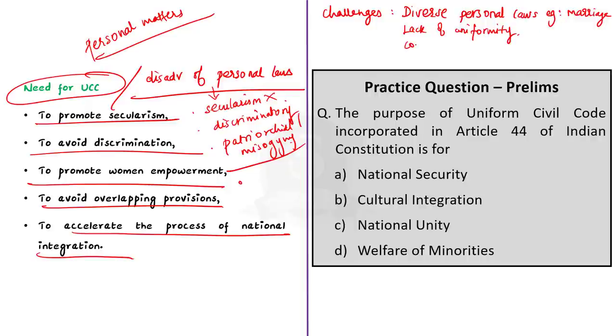There are communal politics. The demand for a Uniform Civil Code is often seen as a form of majoritarianism or favoring one religious group over others. Communal politics and social reform are intertwined in the discussion around the Uniform Civil Code. Then, there are constitutional conflicts. Article 25 of the Indian constitution protects the freedom of religion and this conflicts with the principle of equality under Article 14. Balancing religious freedom with the need for uniformity poses a constitutional challenge. In summary, the diverse personal laws, communal politics and constitutional conflicts present significant challenges in implementing Uniform Civil Code in India.